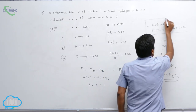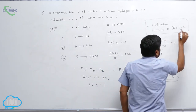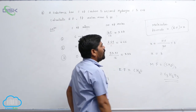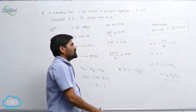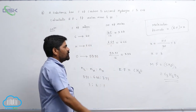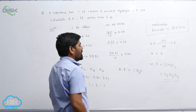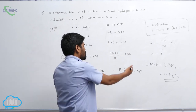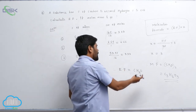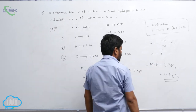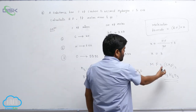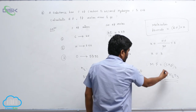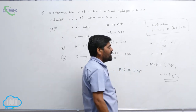To recap: molecular formula weight equals empirical formula weight multiplied by x. So x equals 90 divided by 30, which is 3. Therefore the molecular formula equals C₃H₆O₃.